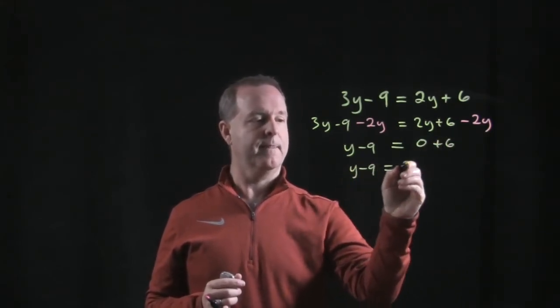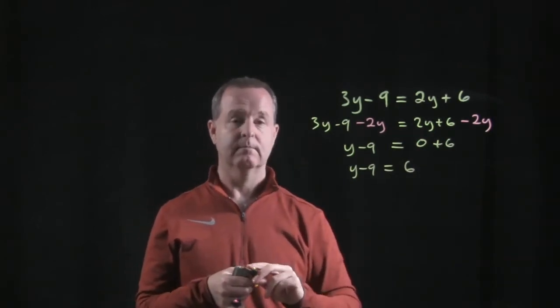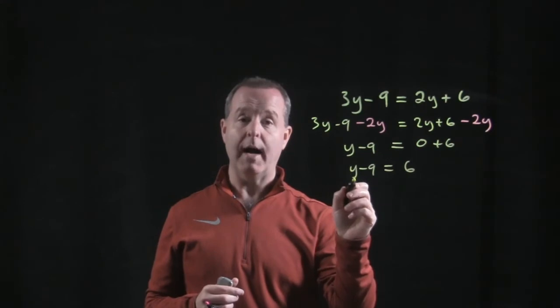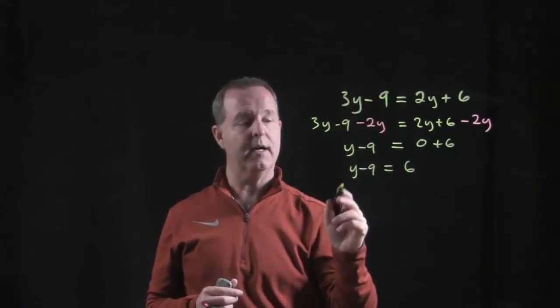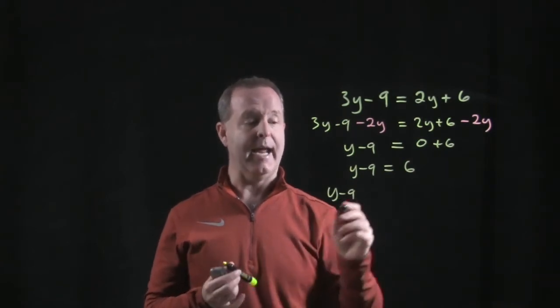Y minus 9 equals 6. Now what do you think we should do? To isolate y, which is our goal—this is a two-step process to isolate a variable—we have y minus 9, so to isolate it, let's add 9.